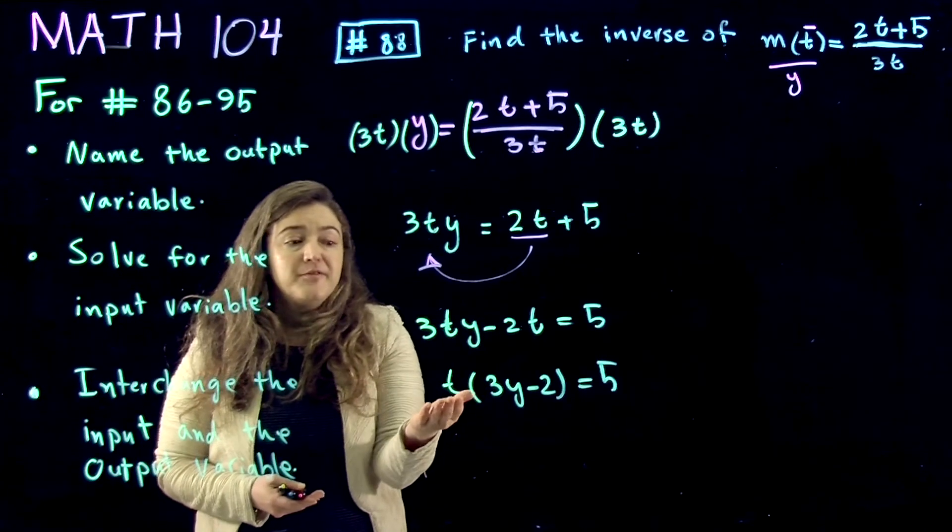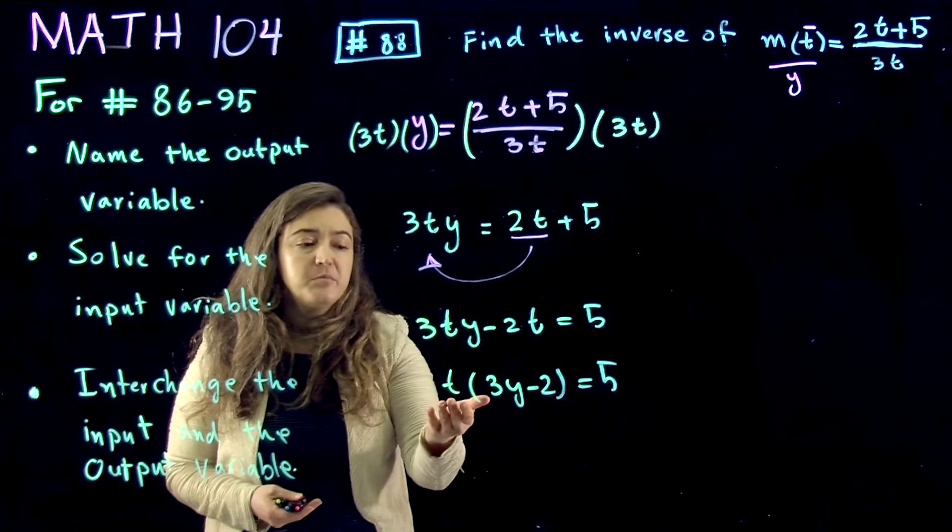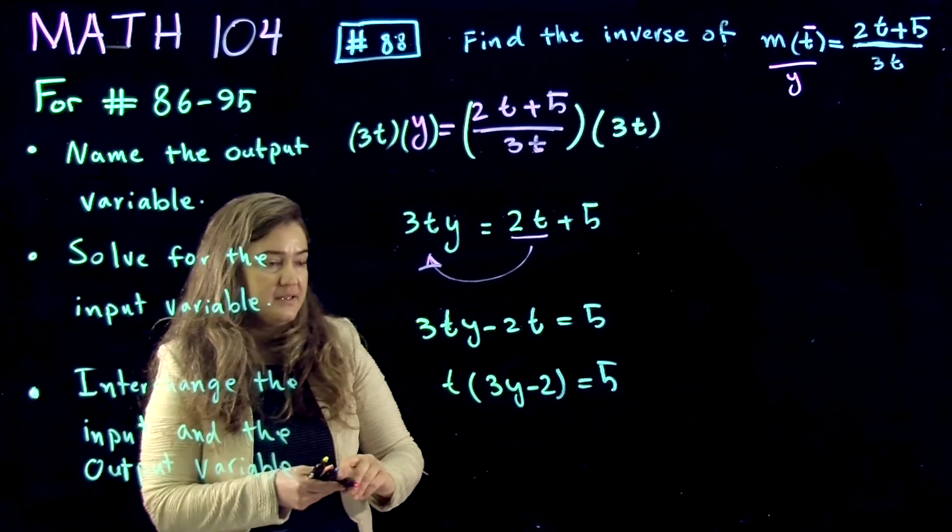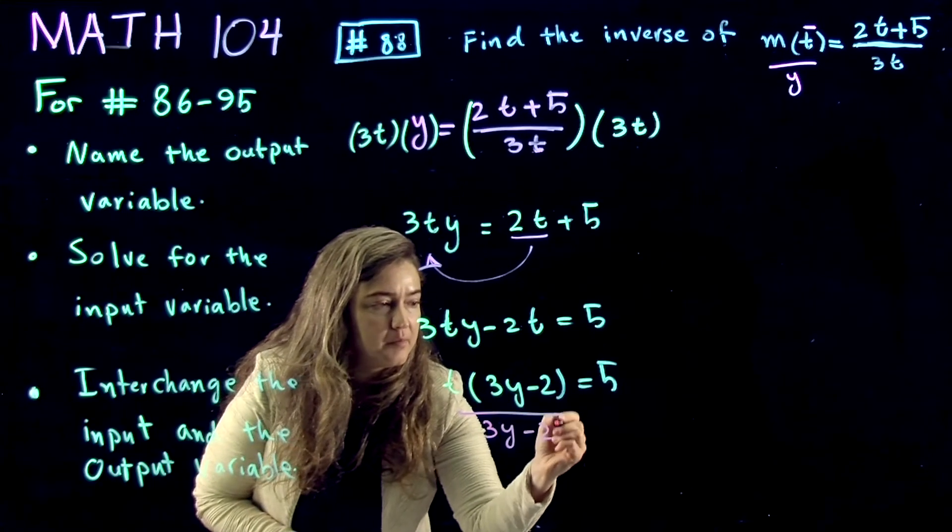Now that we factored t, what we want to do is divide by what multiplies t on this side. So we divide both sides by 3y minus 2.